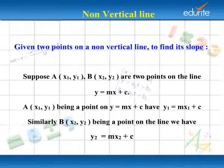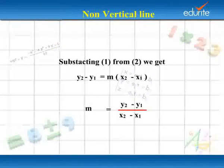Similarly, B (x₂, y₂) being a point on the line, we have y₂ = mx₂ + c, equation 2.